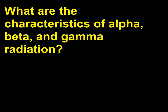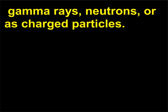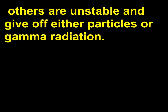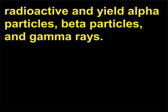What are the characteristics of alpha, beta, and gamma radiation? Radiation is a term that describes all the ways energy is emitted by the atom as X-rays, gamma rays, neutrons, or as charged particles. Most atoms, being stable, are non-radioactive. Others are unstable and give off either particles or gamma radiation. Substances bombarded by radioactive particles can become radioactive and yield alpha particles, beta particles, and gamma rays.